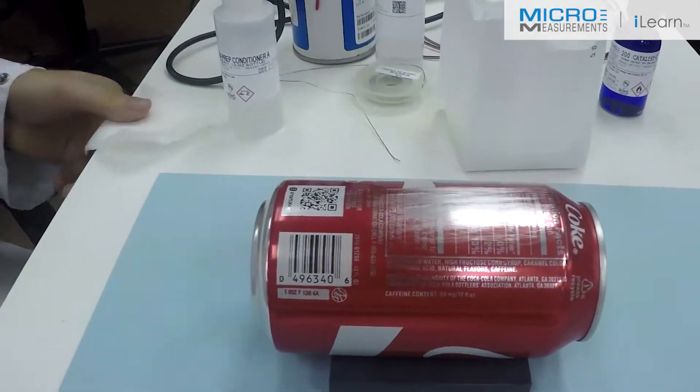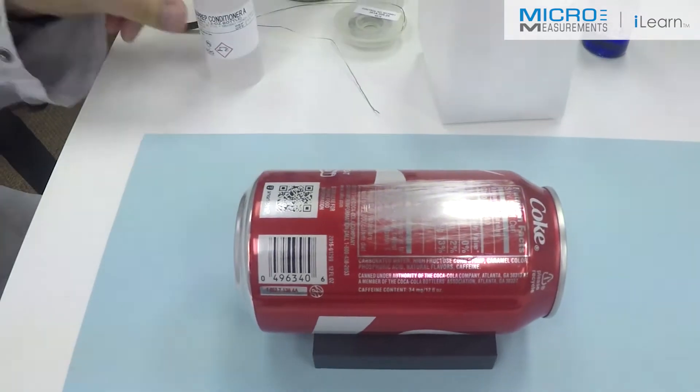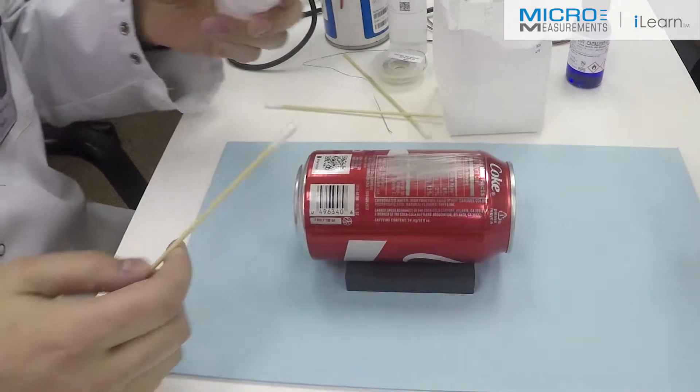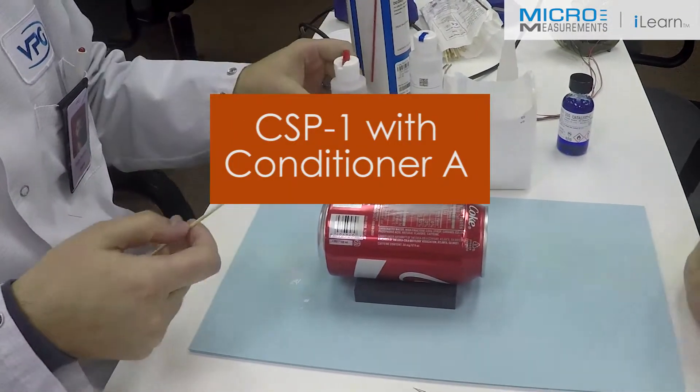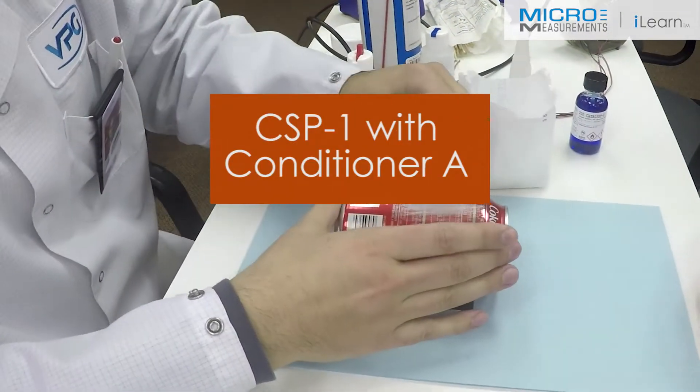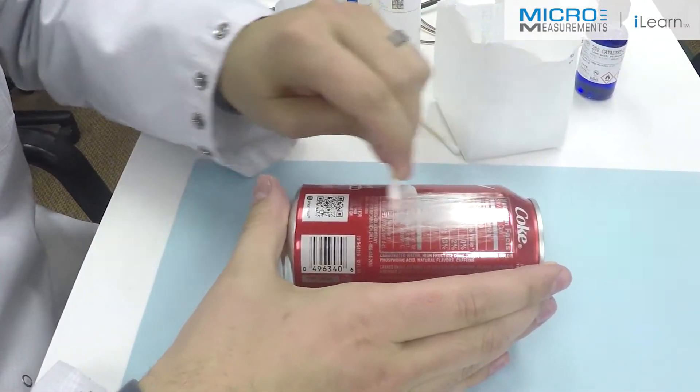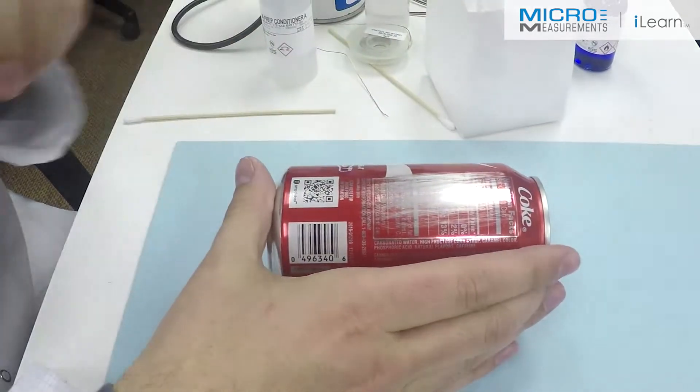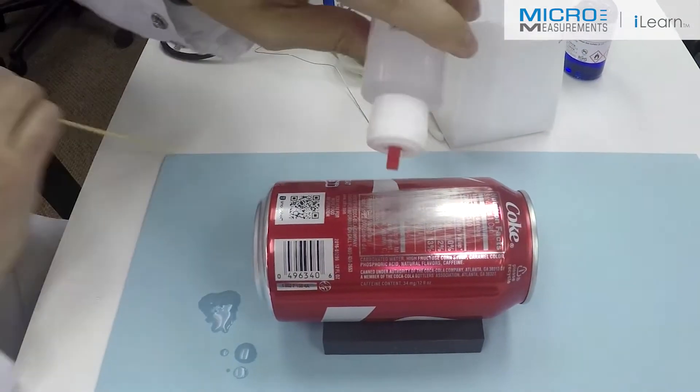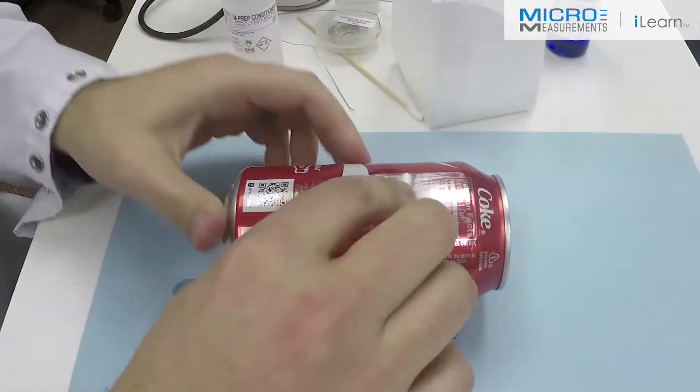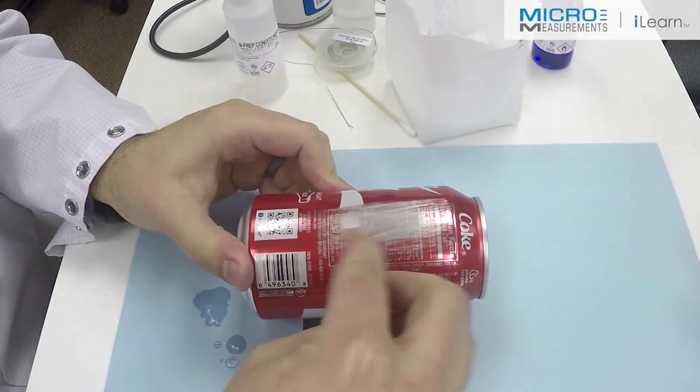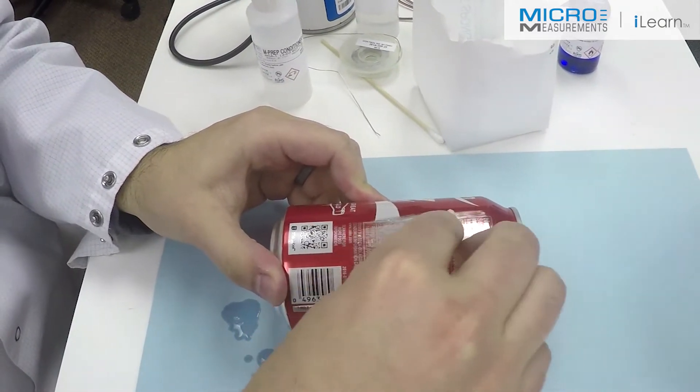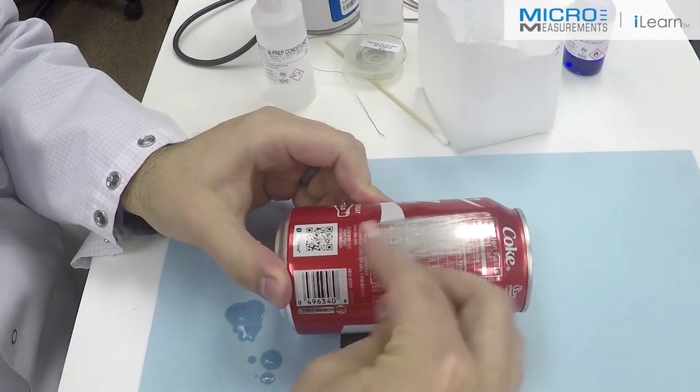The next step will be to scrub it with the Conditioner A and a cotton tip applicator. Again, the Conditioner A is a mild phosphoric acid solution. What we're doing now is getting rid of that dust and debris that we got loose from the can. You'll notice his cotton tip applicator is coming up rather red, meaning it's fairly contaminated. He'll scrub until he's comfortable that he's gotten rid of most of the paint in powder form. The aluminum will continue to be etched by the Conditioner A, so it'll always come up a little bit dark but not red colored.